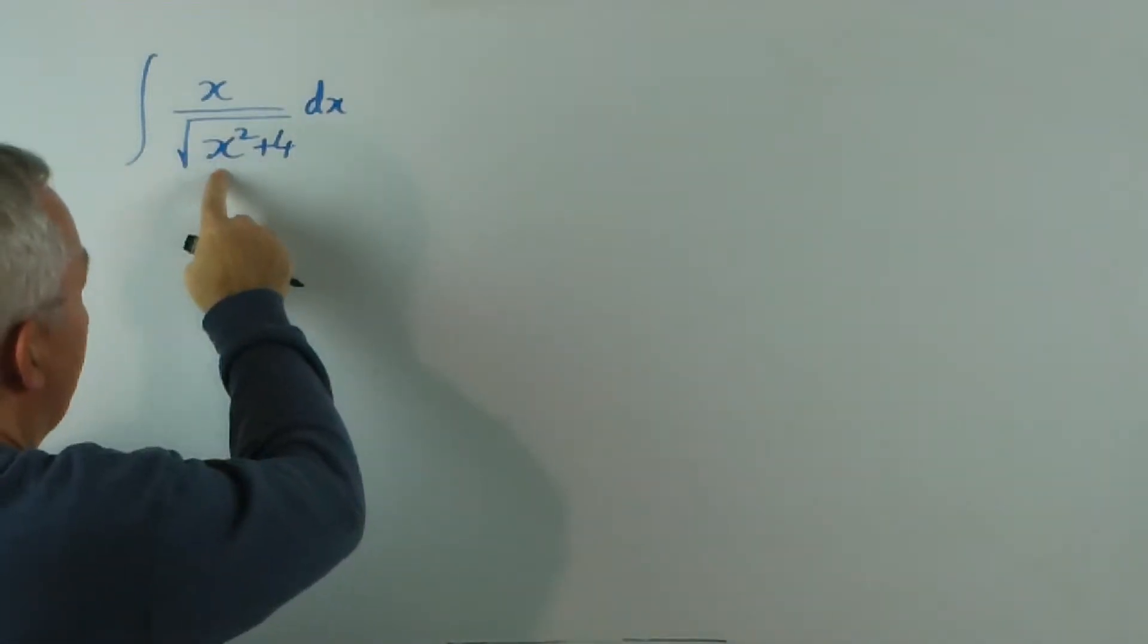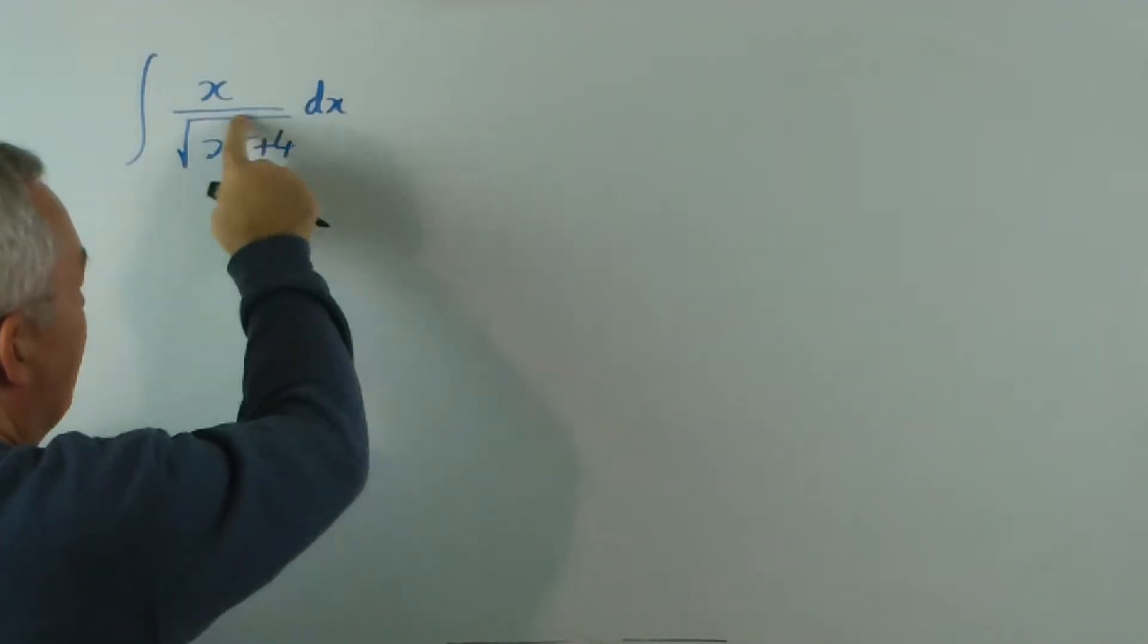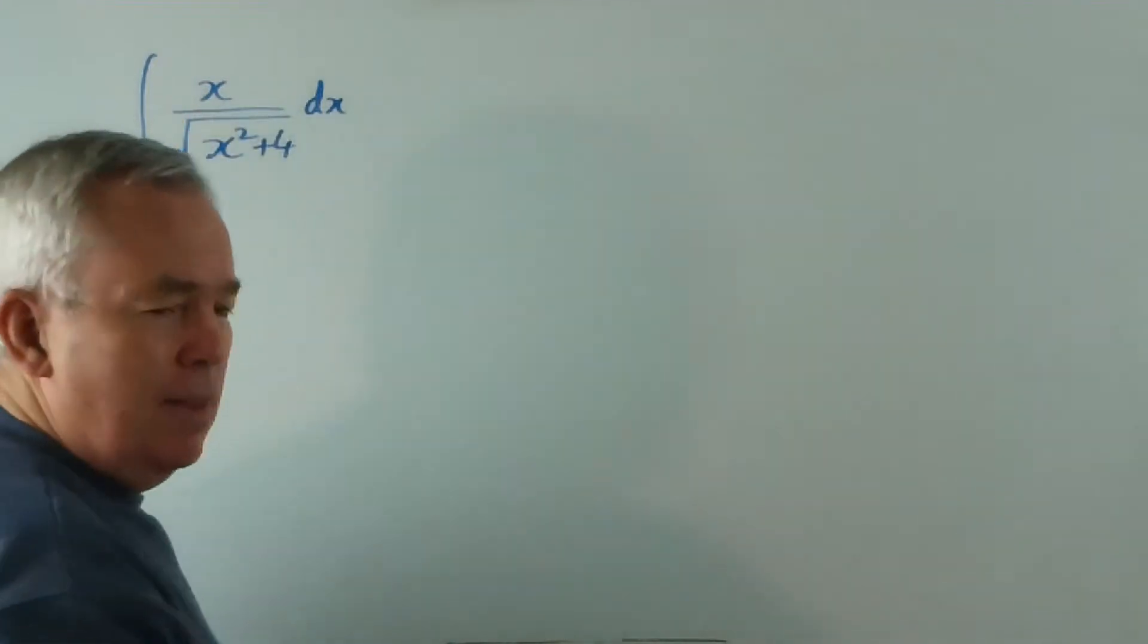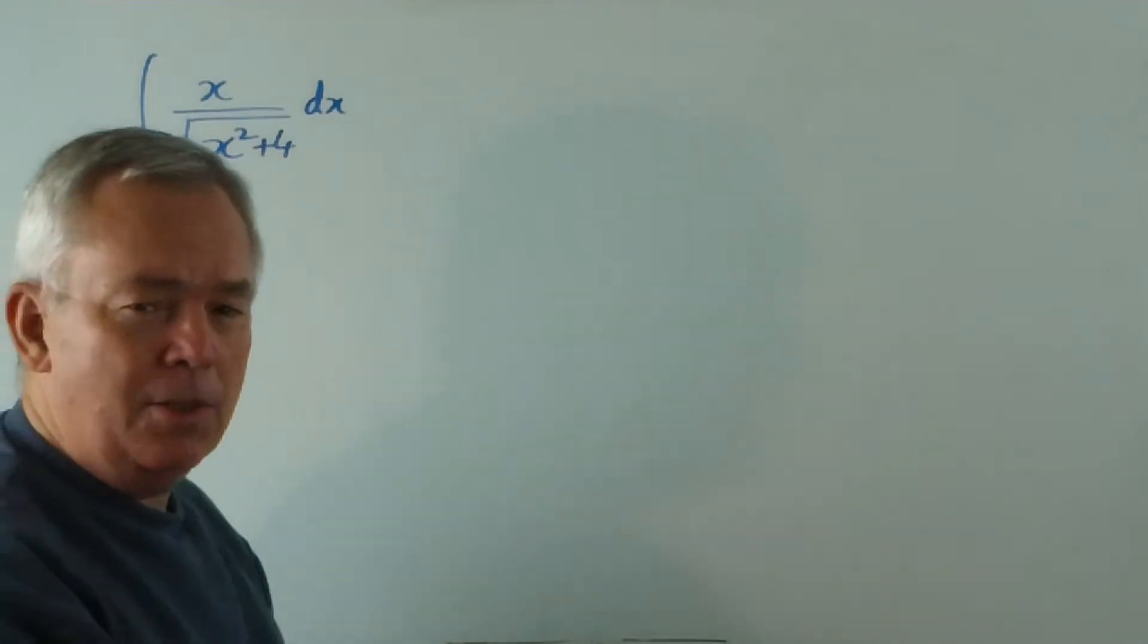But you will notice that, nonetheless, the function inside the radical, the x squared plus 4, its derivative is 2x, which is basically what we have on the top. We can certainly provide a 2 if we need to.